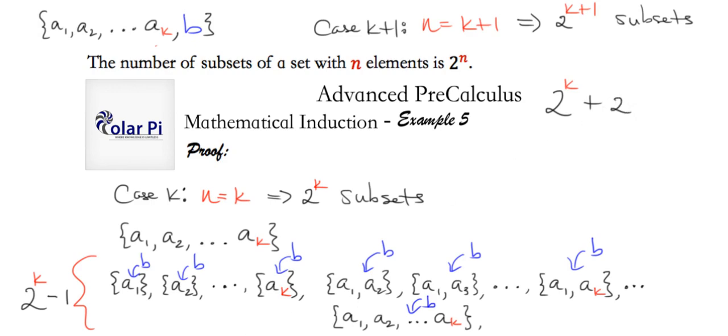So if we write down all the new ones that I just wrote down right here, they're not 2 to the k in amount anymore. They're 2 to the k minus one of them with b thrown into the ones that were subsets of that guy, right? So we have 2 to the k and then minus one, right?